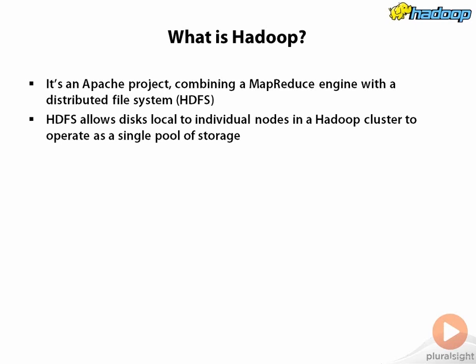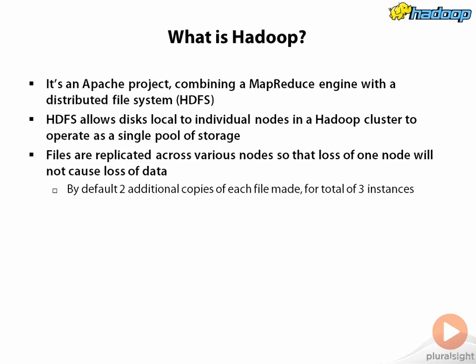Let's talk a little bit about HDFS itself. HDFS allows the local disks on each of the nodes in the Hadoop cluster to be pooled together as a single pool of storage. The files that exist on a given node are typically replicated on other nodes, and by default there are two additional copies of each file made, for a total of three copies. That way, if a particular node fails, we won't lose data because that data is also stored on at least two other nodes by default.